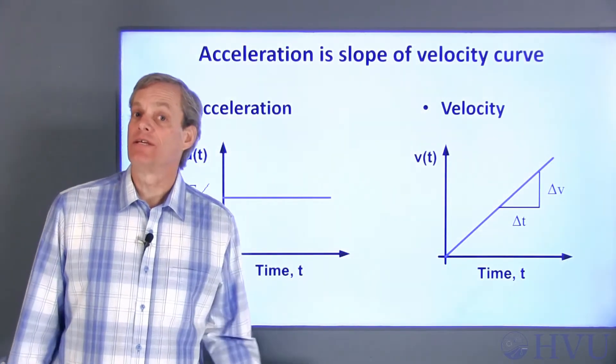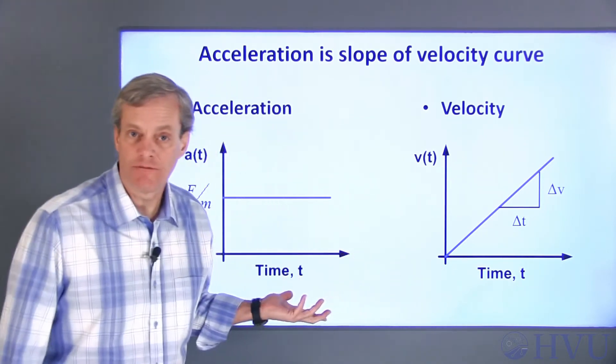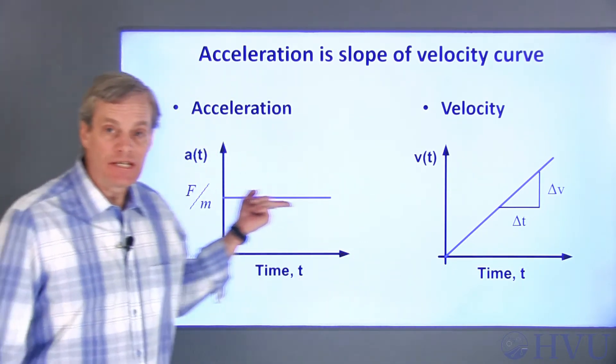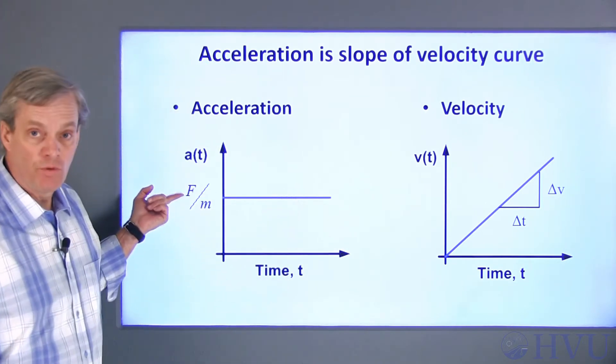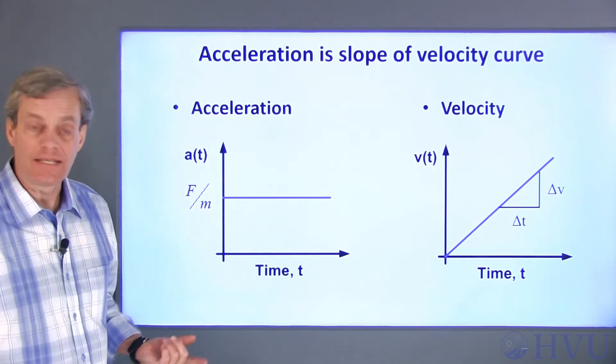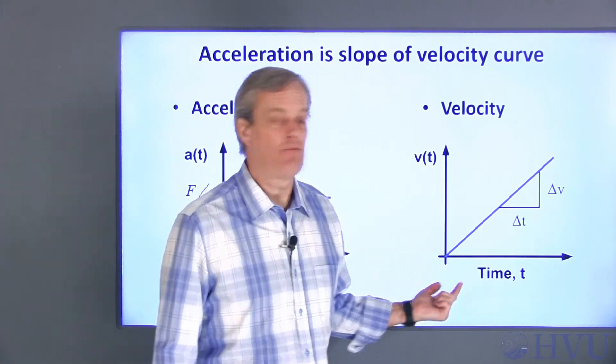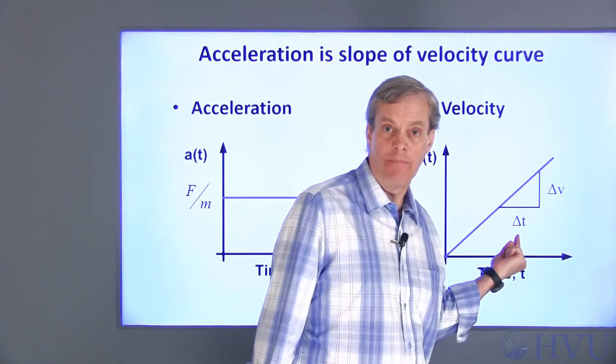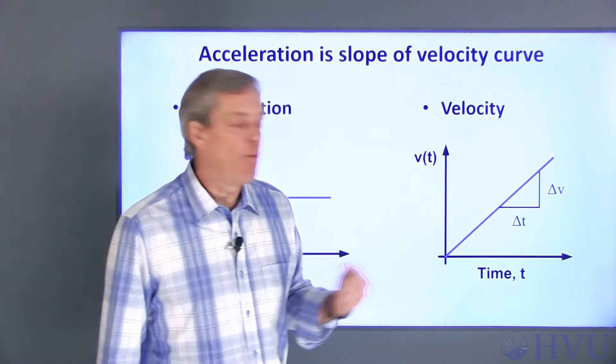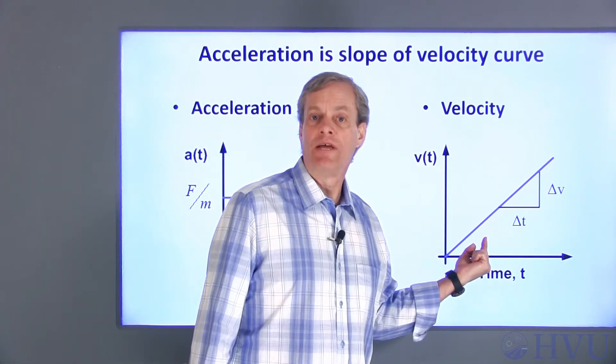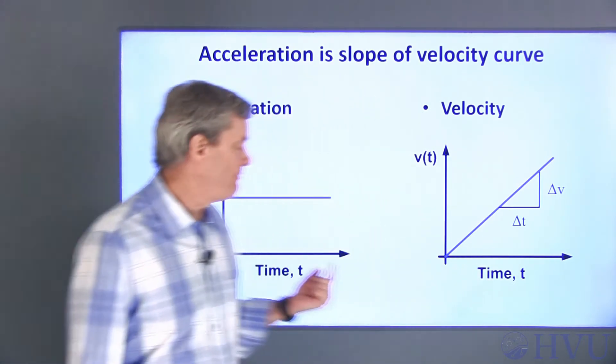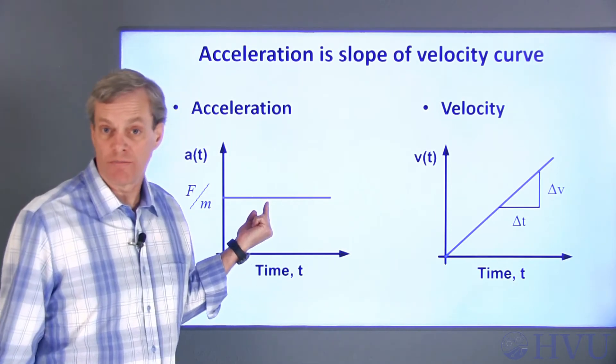Graphically, the acceleration and velocity look like this as a function of time. The acceleration is a constant and is the ratio of force to mass. The velocity increases at a constant rate, so it's a straight line with a slope of f divided by m. So, at any point on the velocity curve, the rate of change of velocity with time will be the value of acceleration at the corresponding time.